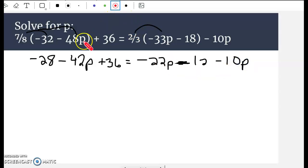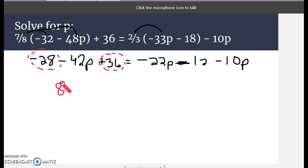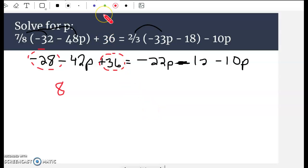Next up is combining the like terms. The negative 28 and the positive 36 comes together and that gives us a positive 8. 36 minus 28 is a positive 8. Let's look at the right side of the equation. We have a negative 22p. We have a negative 10p. That comes together to give us negative 32p. So at this step, I'm just combining like terms. On the left side, I still have negative 42p untouched. On the right side, I still have that negative 12 untouched.